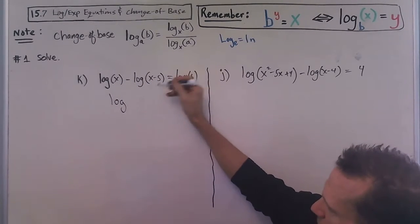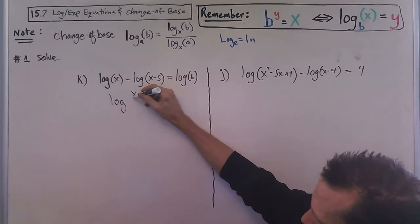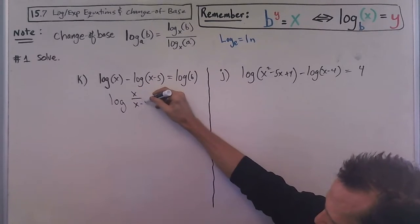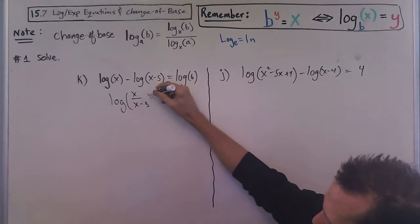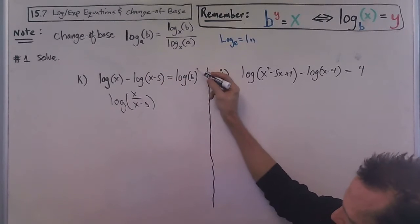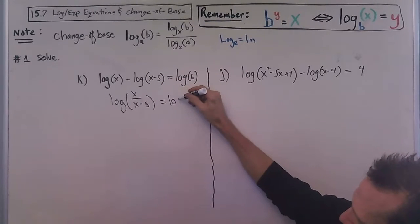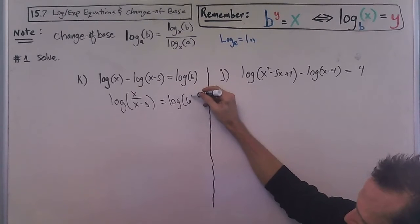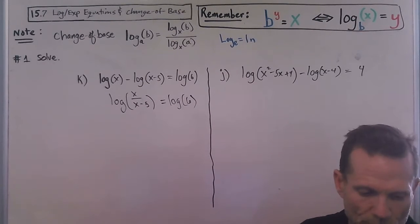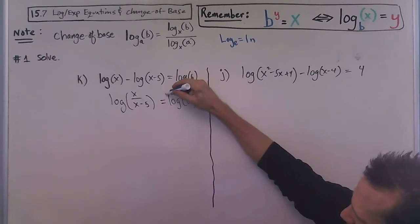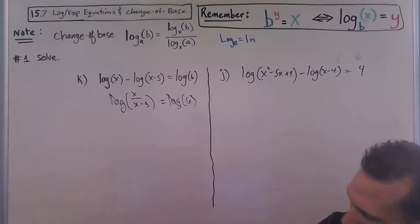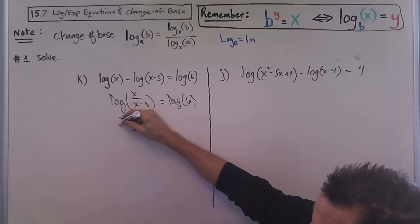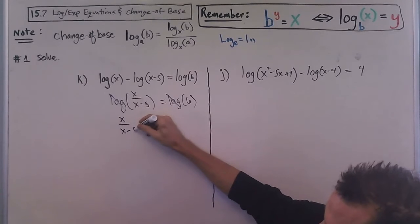I'll write log of x over x minus 5. Remember we have our subtraction correlates to division, and then we have log of base 10 of 6. So here we can cancel out our logarithms and we get x over x minus 5 equals 6.